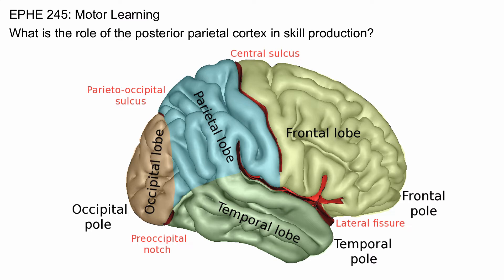Movement requires vision, and the posterior parietal lobe — the portion of the parietal lobe that's superior and connected to the occipital lobe — receives visual input and is known as the dorsal visual stream, the flow of vision for action.